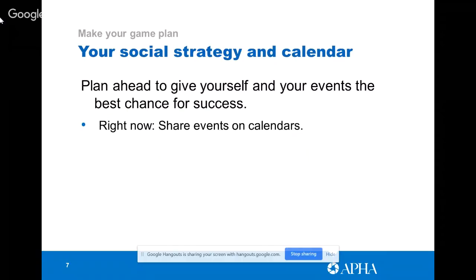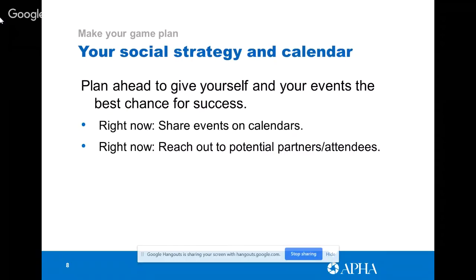You also want to be sharing on calendars where you live. If you are at a state university, consider sharing on the university calendar. Put out to folks' listservs and make sure you're reaching out to all the places you might want to be seen — community newspaper calendars are great for this, as are neighborhood listservs. You should also think about reaching out to potential partners and attendees right now, so if there's a group you really want involved, start talking to them to make sure you have the best chance for their attendance and support.